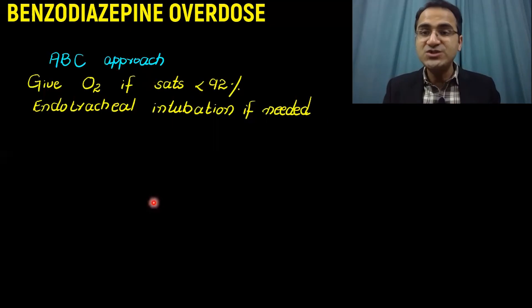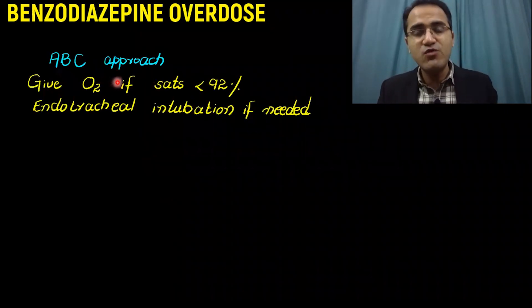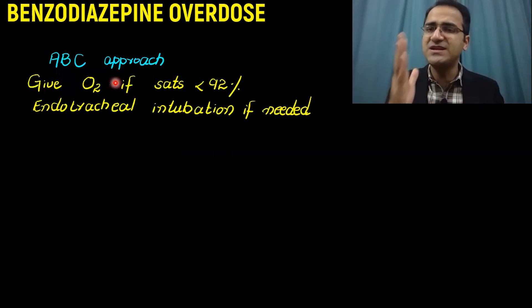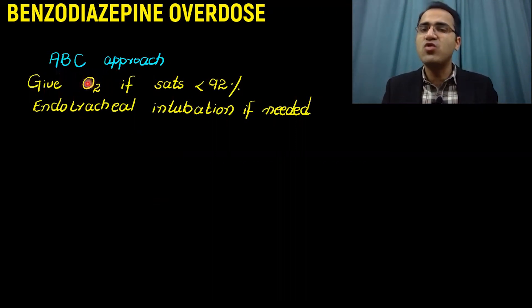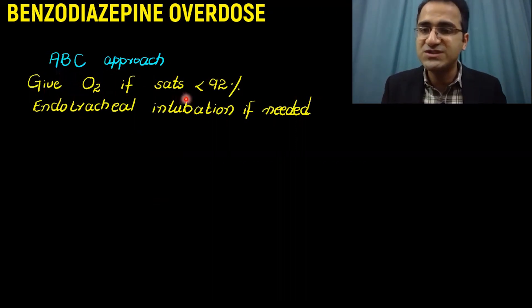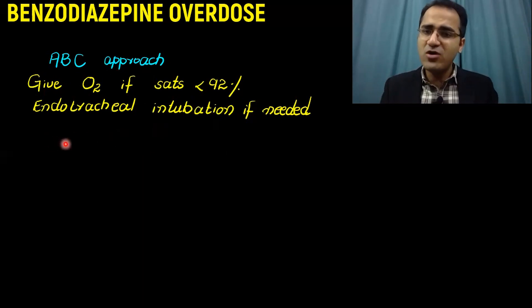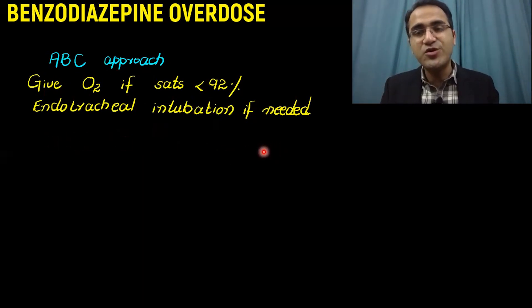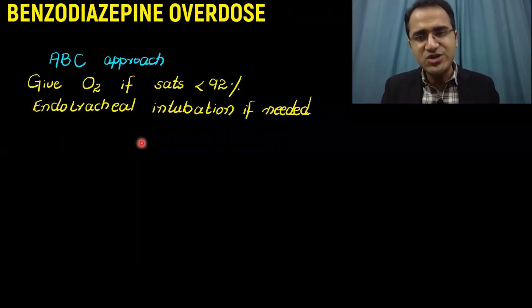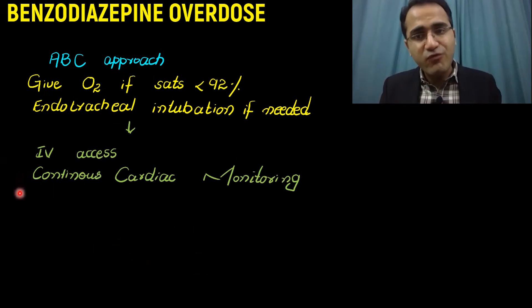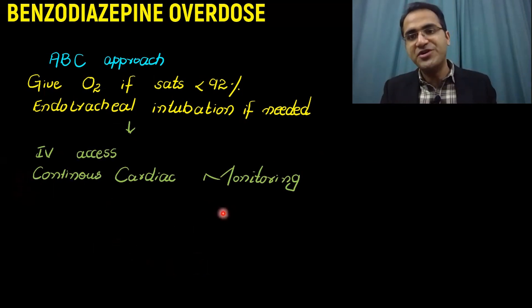In the treatment of benzodiazepine overdose, use an ABC approach — airway, breathing, circulation. Protect the airway because respiratory depression is the highest risk. Give oxygen if saturation is less than 92%, and perform endotracheal intubation if needed or if GCS is less than or equal to 8. Maintain IV access and perform continuous cardiac monitoring.